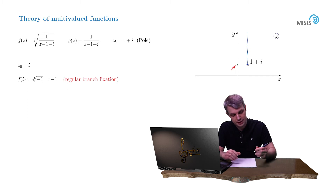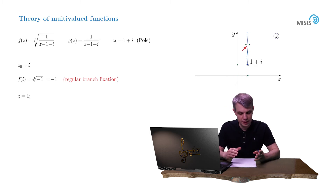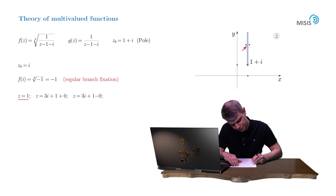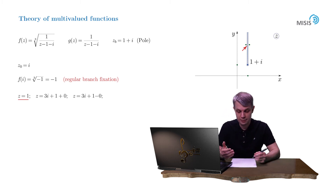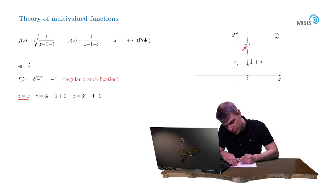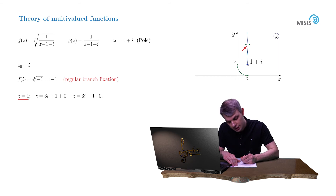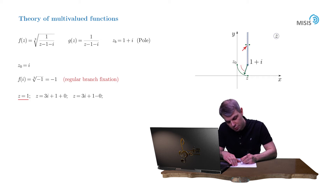We'll practice with three distinct points: z equals 1, and two twin points on the banks of the branch cut, z equals 3i plus 1 plus 0 and z equals 3i plus 1 minus 0. For the first point z equals 1, we draw a contour connecting the reference point i with the point z equals 1. The arrow representing the complex number z minus 1 minus i has its origin at 1 plus i and ends at some point on the contour.